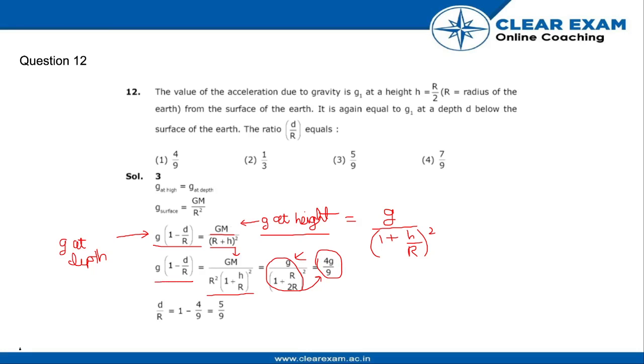Equating with g at depth, d by r is equal to 1 minus 4 by 9, which is equal to 5 by 9. So the correct answer is option 3.